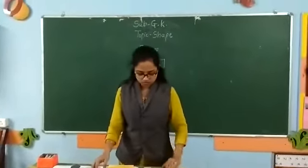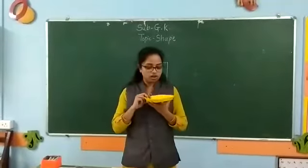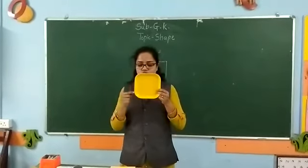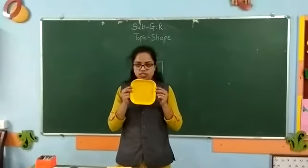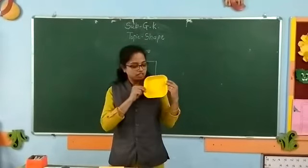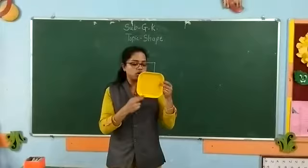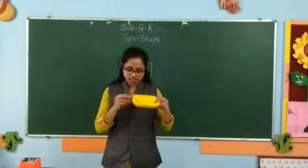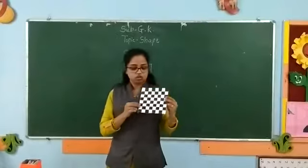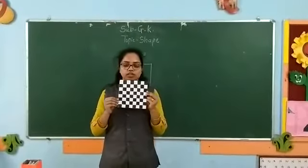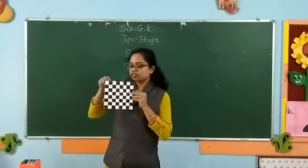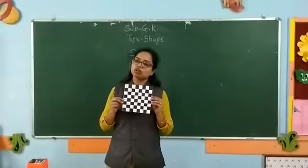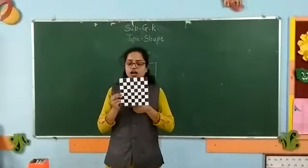The next is this plate. We all eat on a plate, but this plate has a square shape. One, two, three, four — four sides. Its name is square. It has four sides and four corners. So all sides of a square are equal.